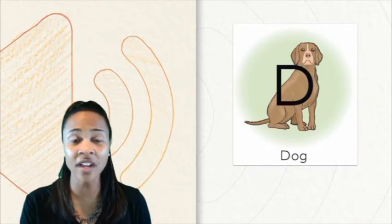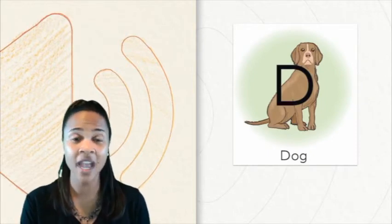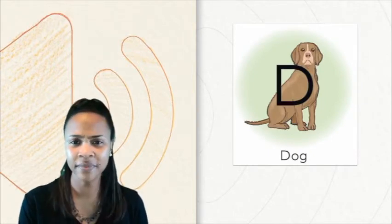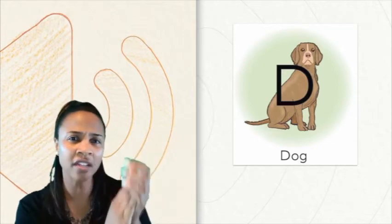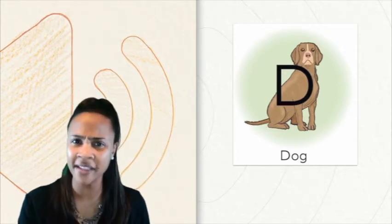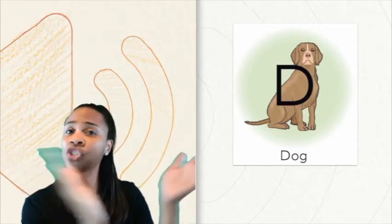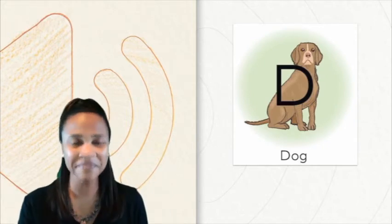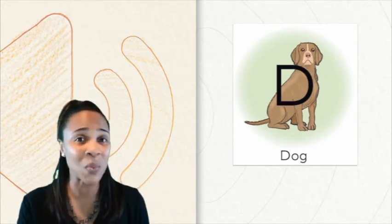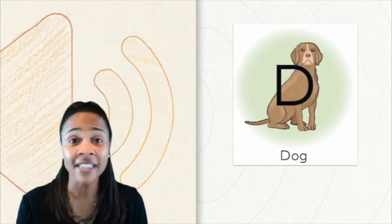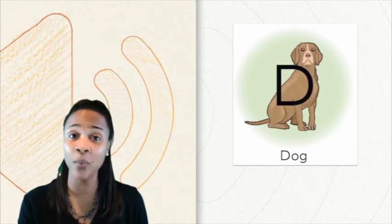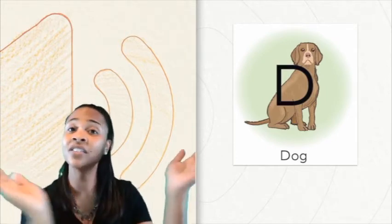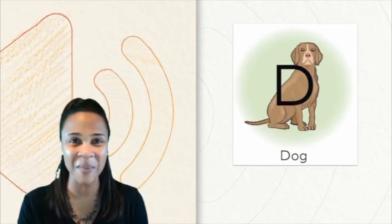Say the word dog with me. Dog. Dog. How many beats are in the word dog? Yes, just one beat. That means there is one syllable in the word dog. Dog. One beat. One syllable.